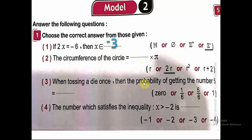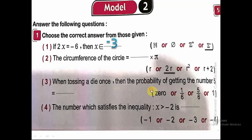Number 3: when tossing a die once, the probability of getting number 5 — I have a die and I'm tossing it one time. Maybe I get number 5 just one time, because in the die I have just one 5. So it's 1 out of 6, because we have six numbers on the die.